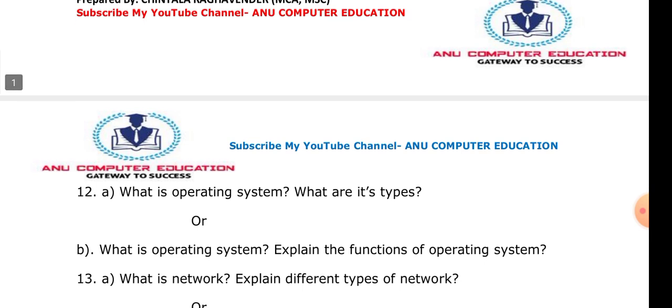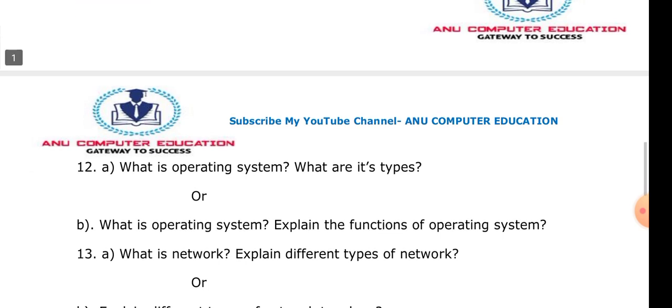A very important question: what is a network and its different types? A network is an interconnection between two or more computers. Once computers are connected, the files, software, and hardware of one computer can be used by another — that is the main benefit of a network. Different types of networks include: LAN (Local Area Network), MAN (Metropolitan Area Network), WAN (Wide Area Network), and PAN (Personal Area Network). Learn the definitions, few advantages, and few disadvantages of all these network types.